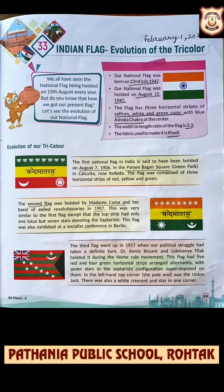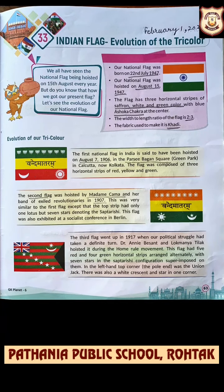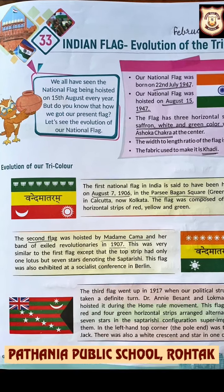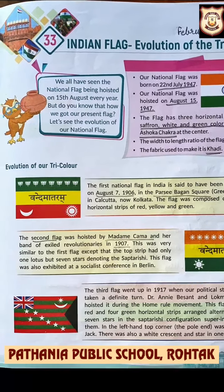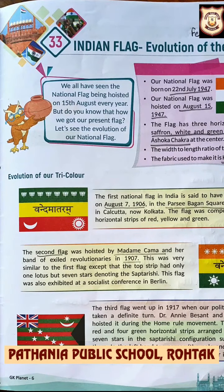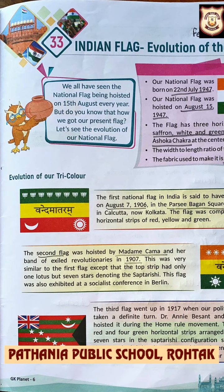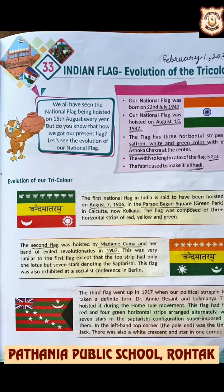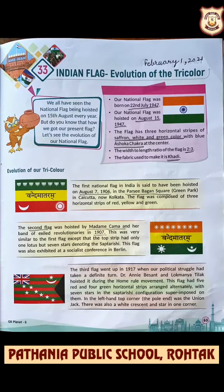This is the third National Flag. We can see the impact of the British flag here — the Union Jack is also there, and red and green colored stripes can be seen. This is the third National Flag of India.